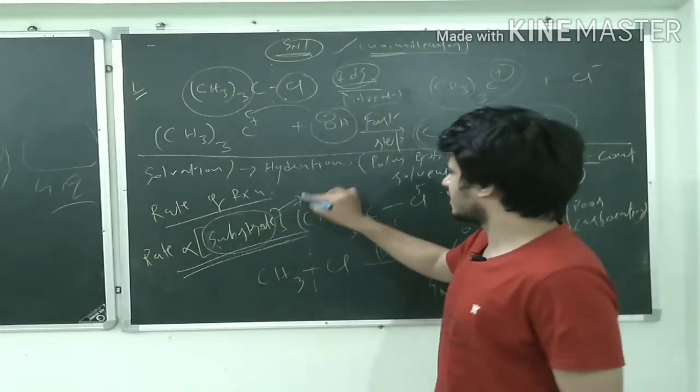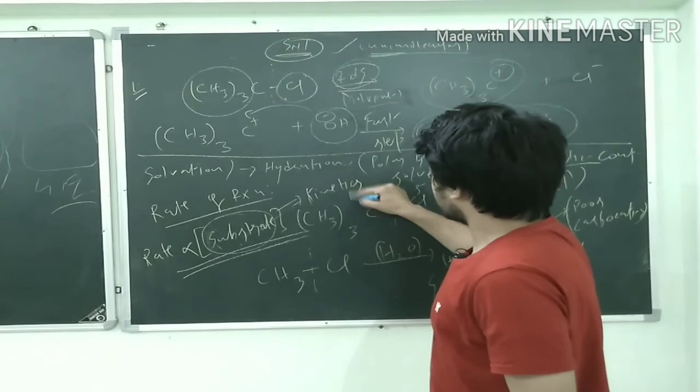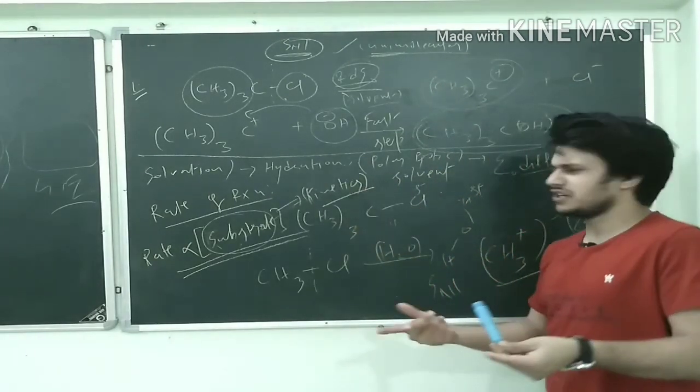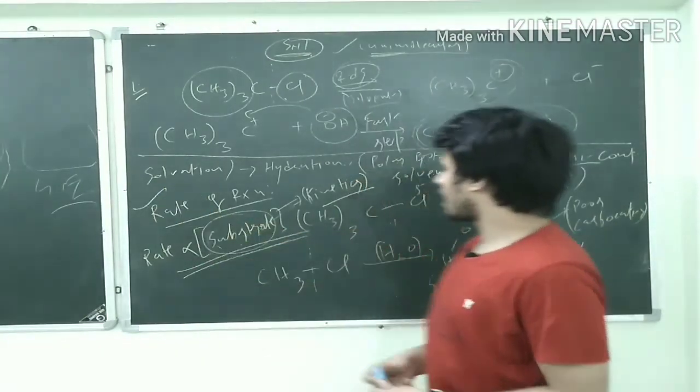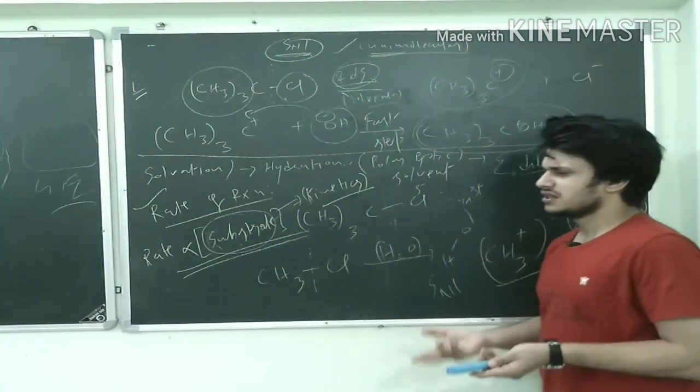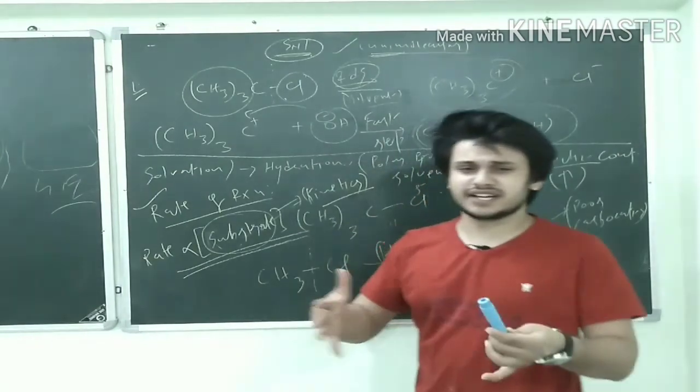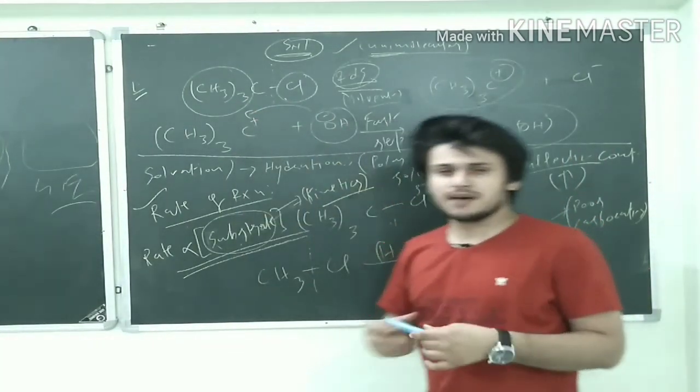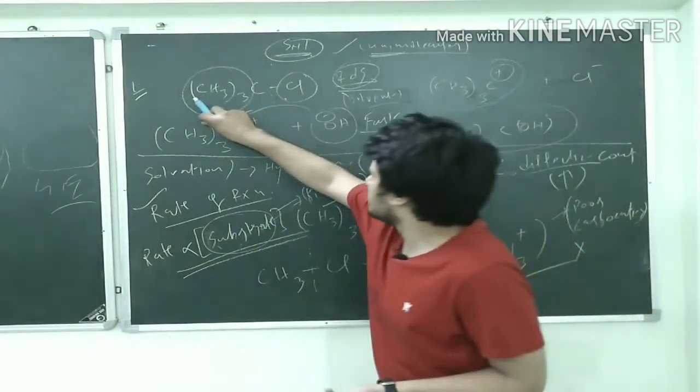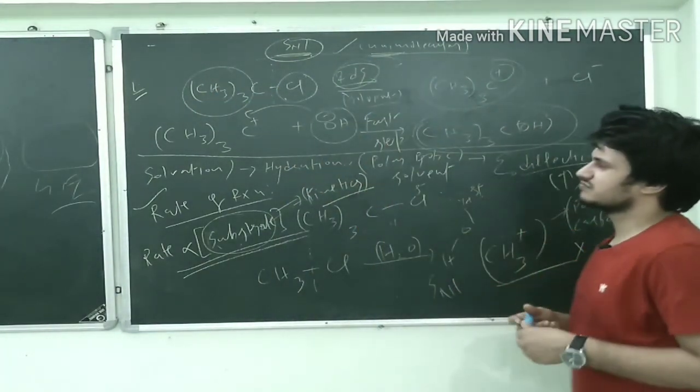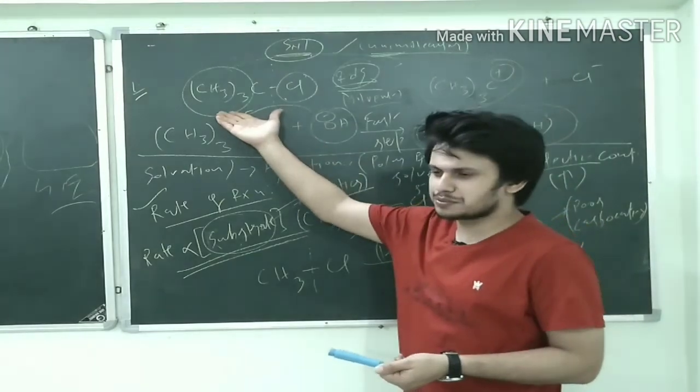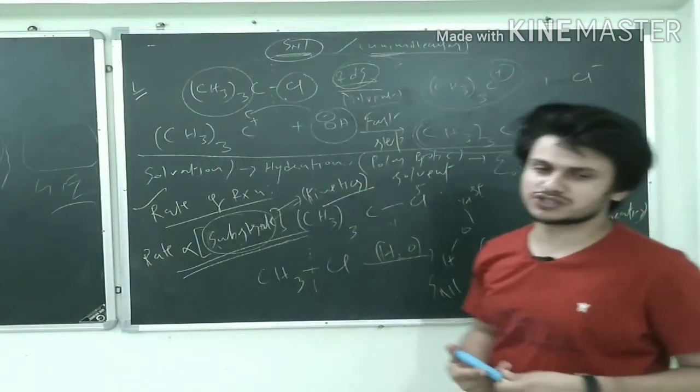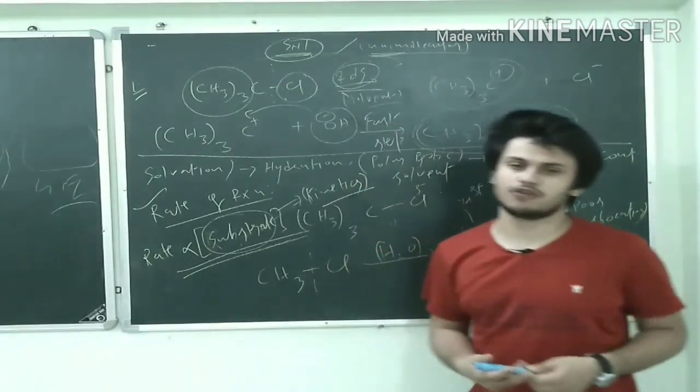I hope you will understand the basics. And reactivity order - I have told you, if the carbocation is more stable, then the reactivity is more. So don't look for steric hindrance over here. Here indirectly you can say that steric hindrance plays a vital role in making the reaction go forward. Because if there is more alkyl groups present, the carbocation formed is ultimately more stable and reaction will proceed forward for sure.